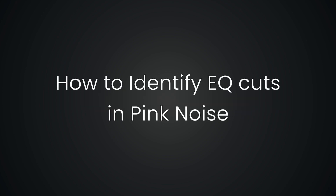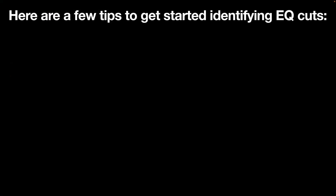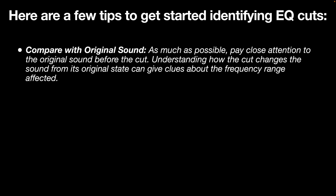And now, on to part 2 of the video. This section will be focused on listening for EQ cuts. Just like in part 1 where we learned about boosts, here we're going to focus on recognizing the absence of certain frequency areas in pink noise. EQ cuts create gaps in the frequency spectrum, leaving behind a void where certain tones used to be. As much as possible, pay close attention to the original sound before the cut — understanding how the cut changes the sound from its original state can give clues about the frequency range affected.